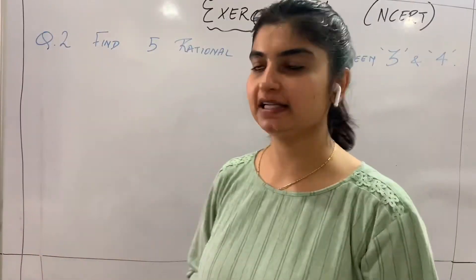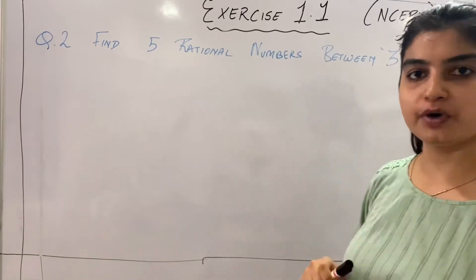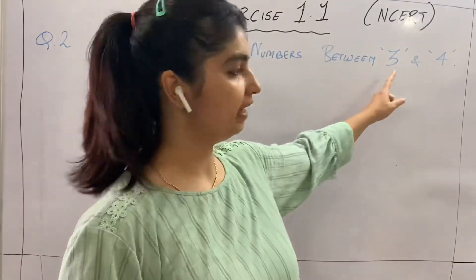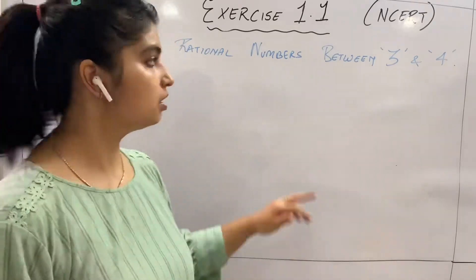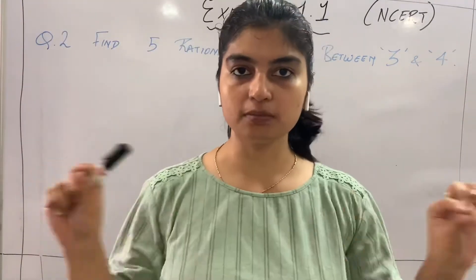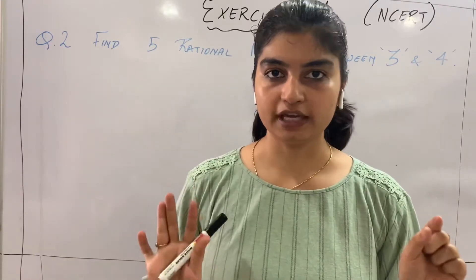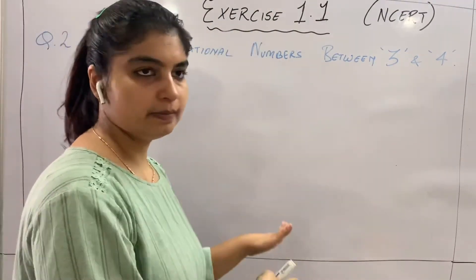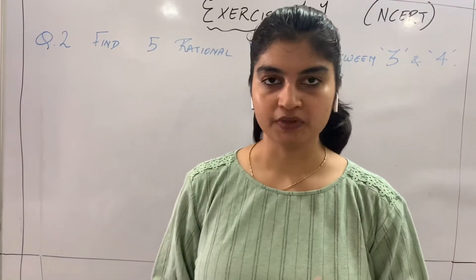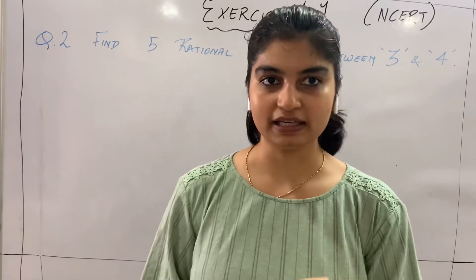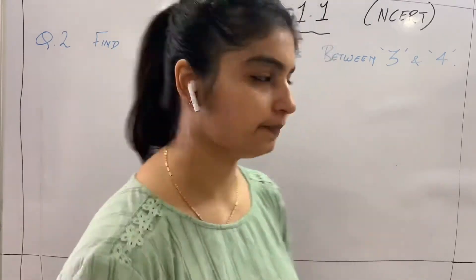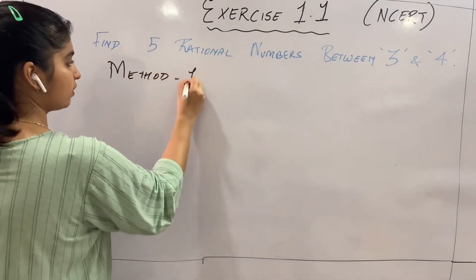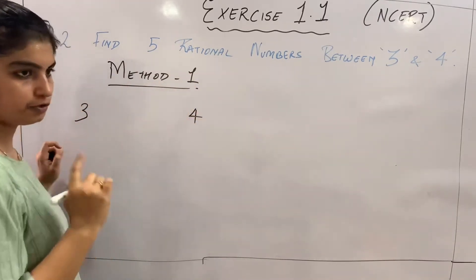Moving to question two of exercise 1.1: find five rational numbers between 3 and 4. As you know, on the number line between any two points there are infinite points, so we need to find at least five rational numbers between 3 and 4. There are two methods to solve this — I'll explain both in detail and you can follow whichever is more convenient.